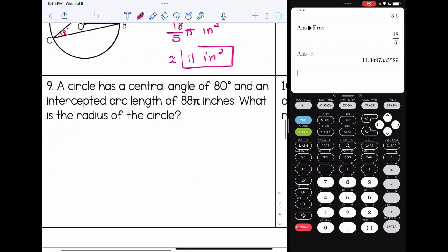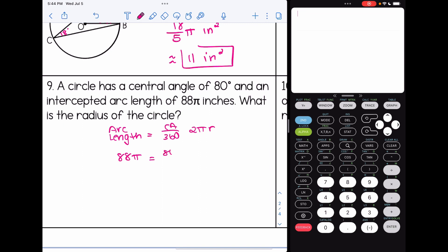All right, two more. Number nine, a circle has a central angle of 80 and arc length of 88π. What is the radius of the circle? So we're going to do the same process here. So arc length is equal to the central angle over 360, but we're doing arc length. So 2πr. Plug in what we know, 88π equals 80 over 360, 2πr. All right, so in this particular case, I'm going to once again divide both sides by pi.